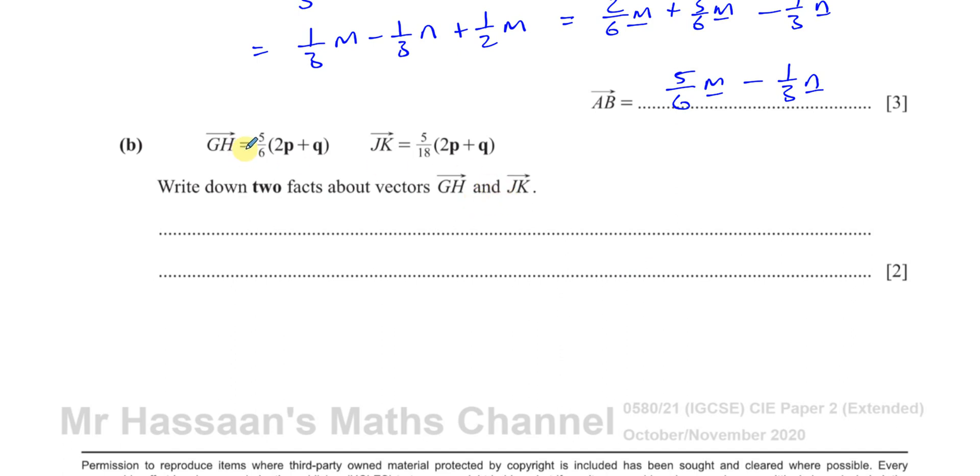Basically, what we can see is that both of these are expressed as multiples of the same vector. This is five sixths of 2P plus Q and this is five eighteenths of the same vector. So that means that these two vectors are parallel to each other. If you can express two vectors as factors of the same or multiples of the same vector they are parallel. So we can say that the first point is they are parallel. The vector G to H is parallel to the vector J to K.